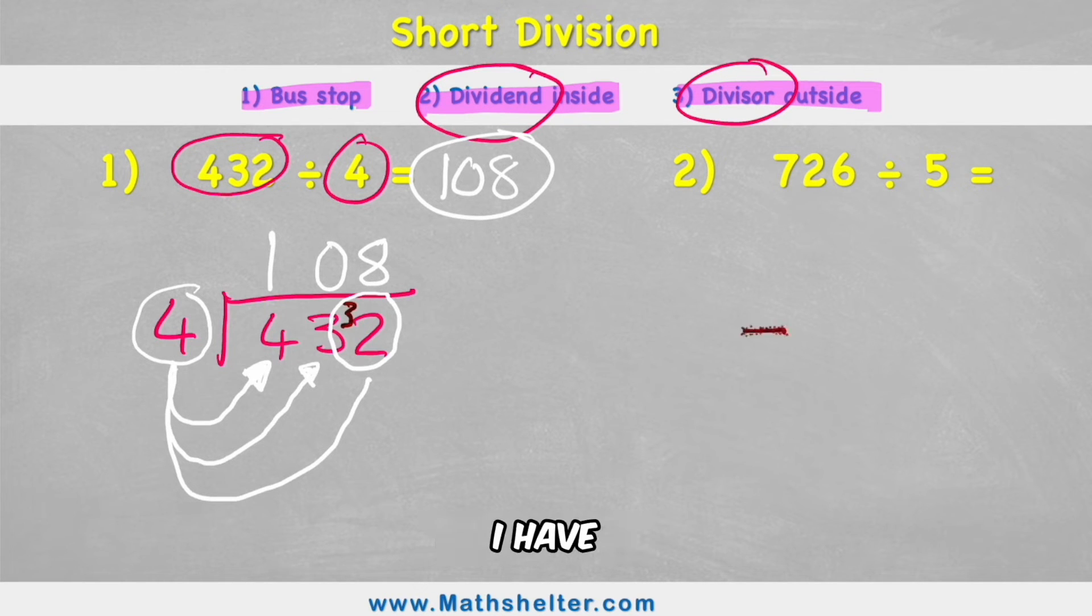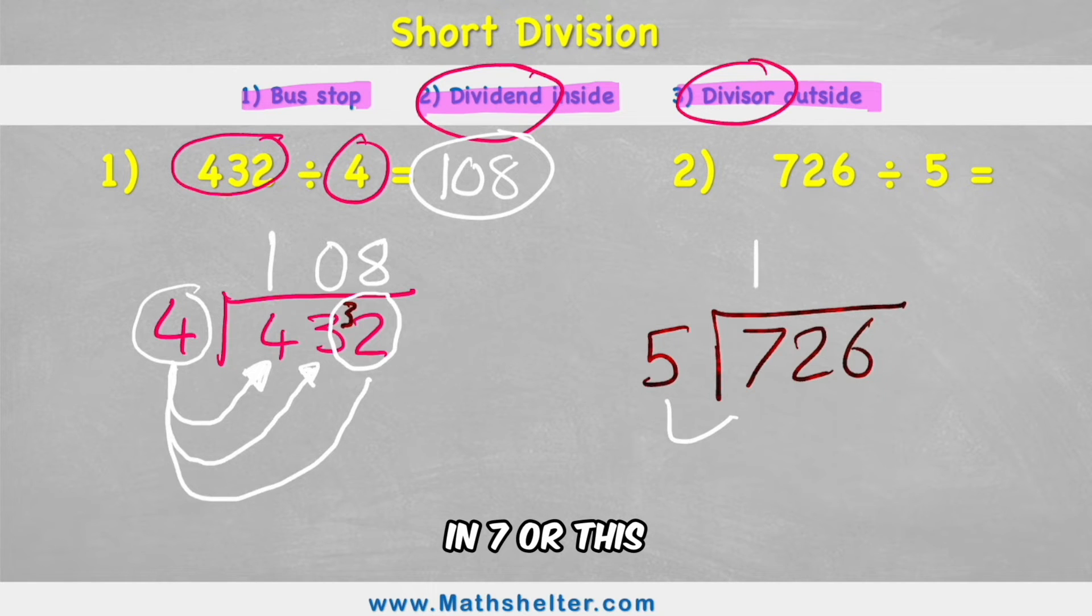This is a little bit harder. I have 726 as our dividend and my divisor is 5. I'm going to do everything like before. How many fives are there in 7? Well, there's one. And how many do I have left over? Well, I would have two left over.